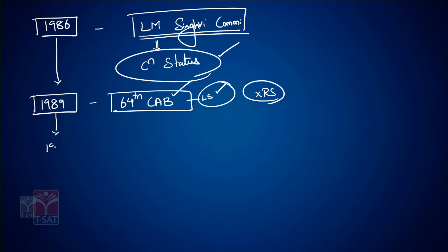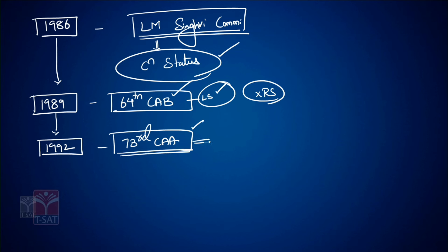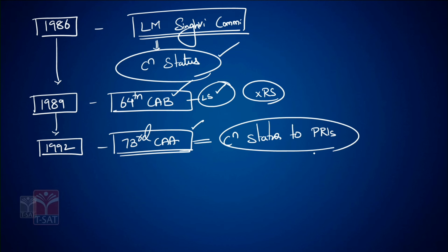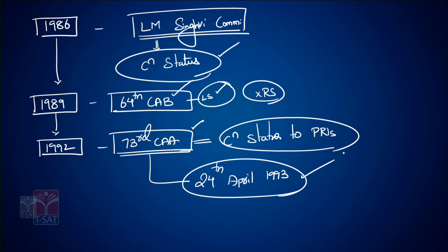Then came the PV Narasimha Rao government, which initiated and passed the 73rd Constitutional Amendment Act, giving constitutional status and powers to Panchayati Raj institutions. This 73rd Constitutional Amendment Act is a landmark in history — after 42 years of the constitution coming into force, it finally decentralized powers to Panchayati Raj institutions. It came into force on 24th April 1993, which is called National Panchayati Raj Day in India.